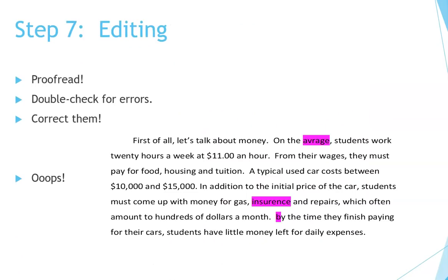Finally, the last step is editing. Proofread and double check for errors. Go through your paper very carefully to make sure you don't have any major or even minor mistakes, and correct them if you see them. Let's take a look at an example — this student made some mistakes, shown in a pink color, including some spelling mistakes.